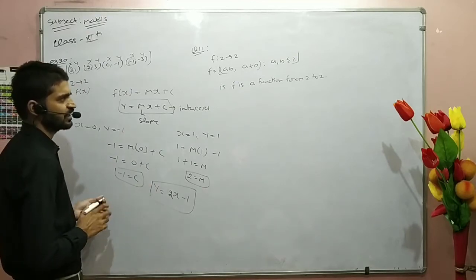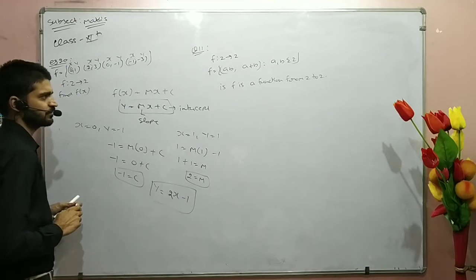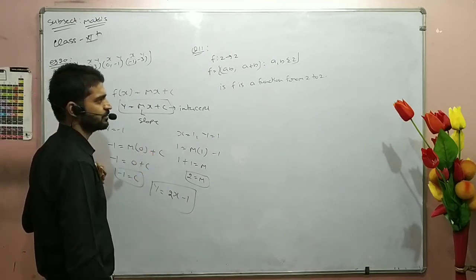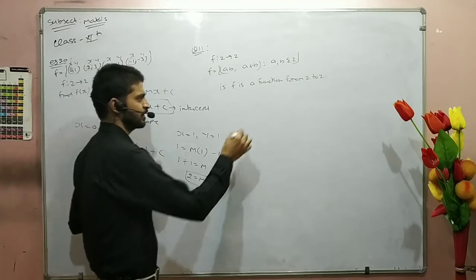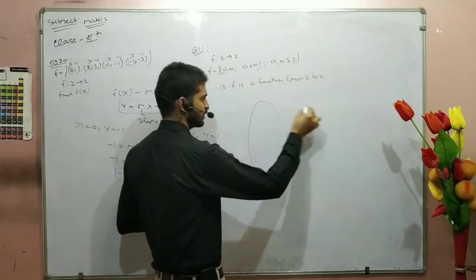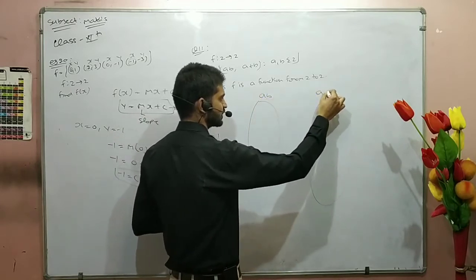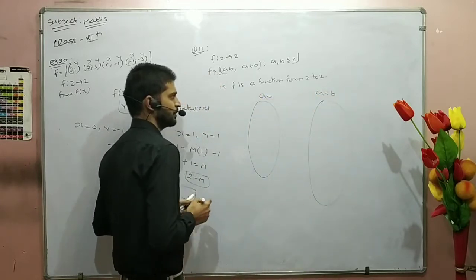For example, number 11, the function is given. Here is a function from A to B, written as A to B. This is the function. We have set A to B, and we have A plus B.